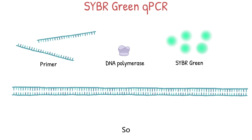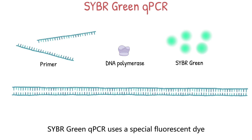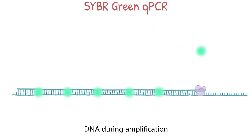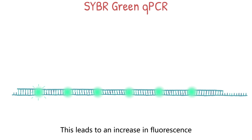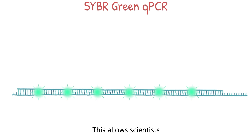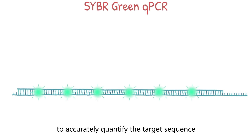CyberGreen QPCR uses a special fluorescent dye called CyberGreen, which attaches to the double-stranded DNA during amplification. This leads to an increase in fluorescence, which can be measured at each amplification cycle, allowing scientists to accurately quantify the target sequence.